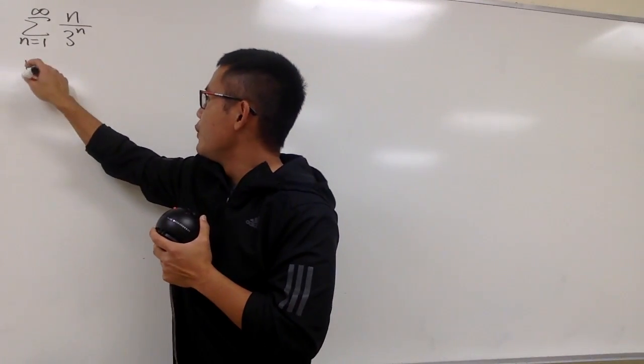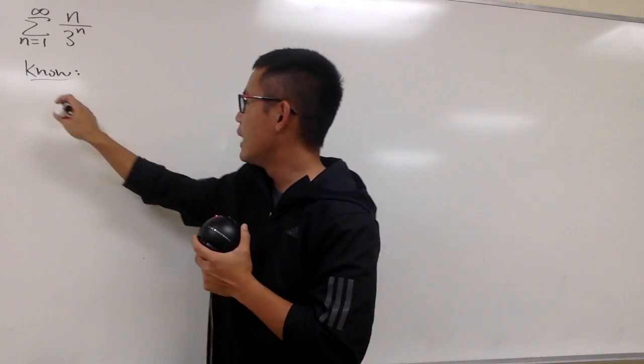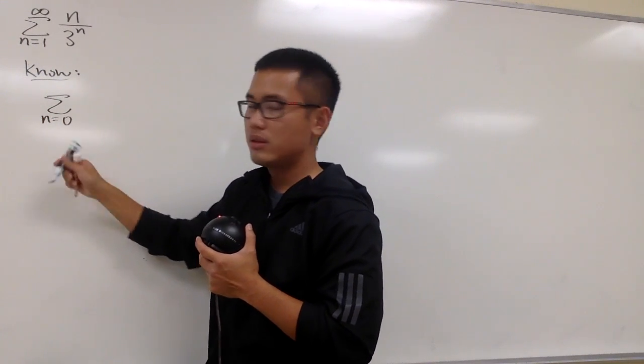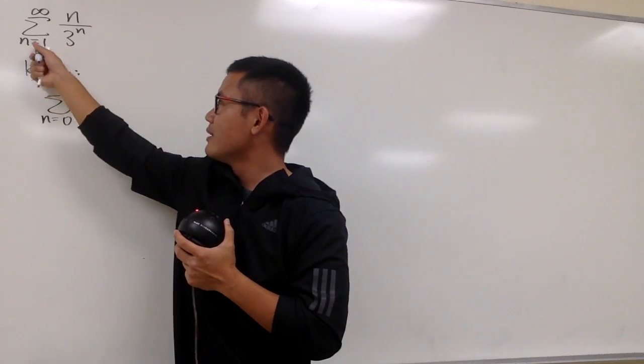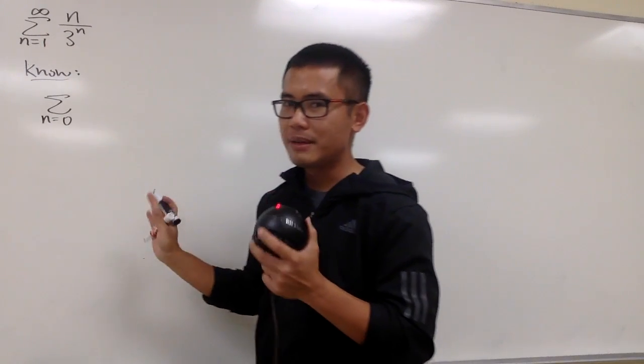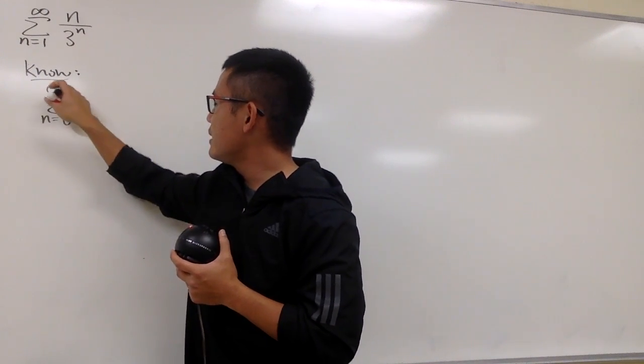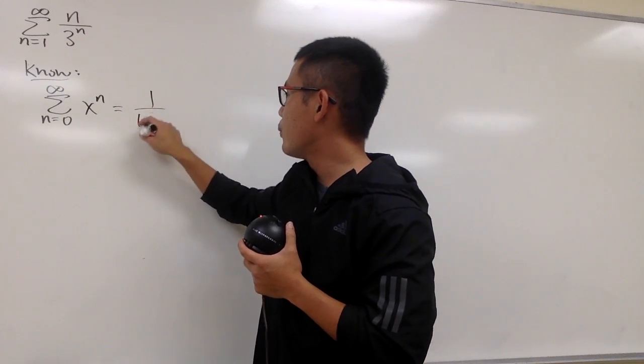So let's write that down. Write the things that we know much better, and we know that the best friend, n goes from 0, right? For the best friend is 0, not 1. This right here is 1, but we'll fix that later on, maybe. Anyway, 0 to infinity, x to the nth power, we know this is equal to 1 over 1 minus x.